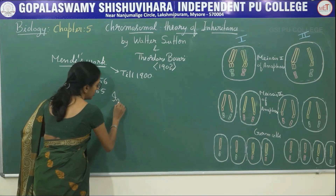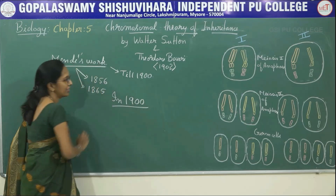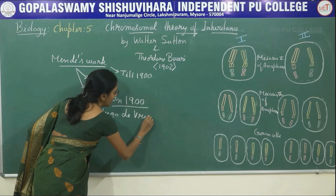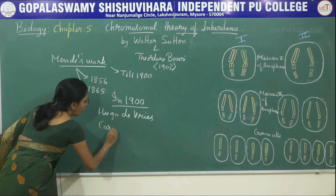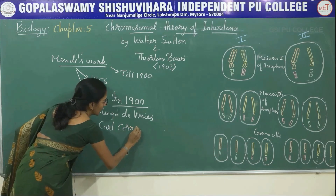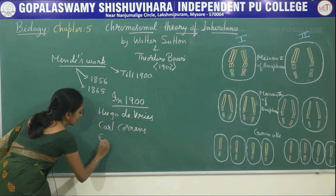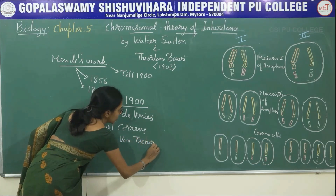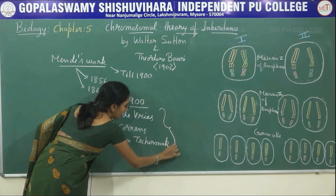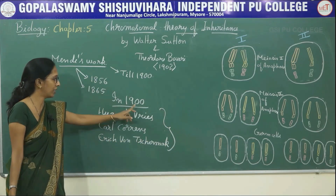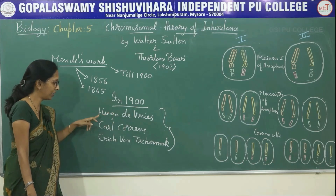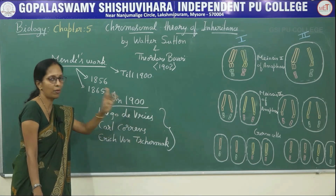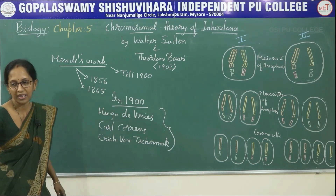In 1900, three scientists — Hugo de Vries, Carl Correns, and Erich von Tschermak — rediscovered Mendel's theory.